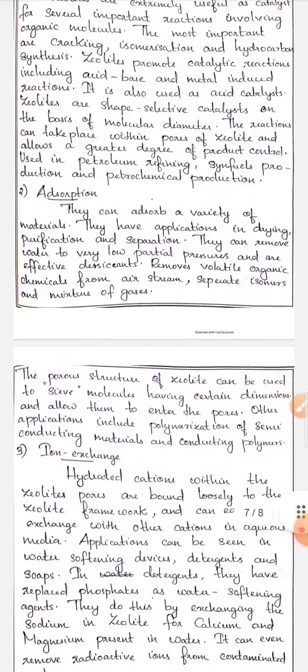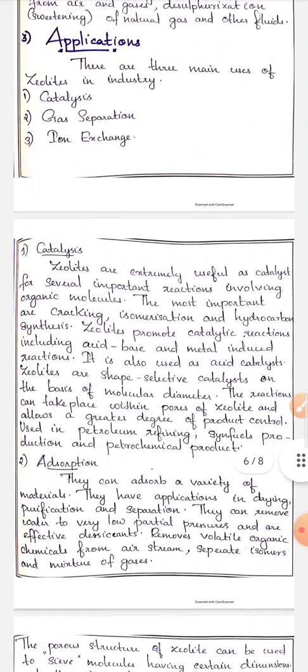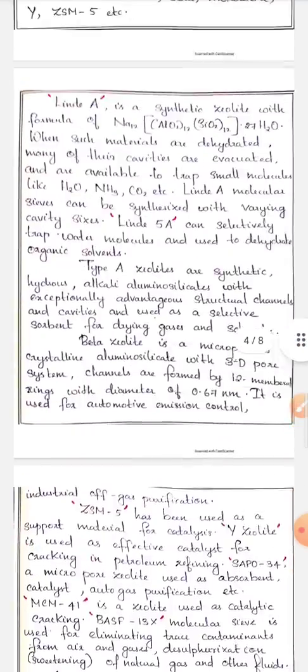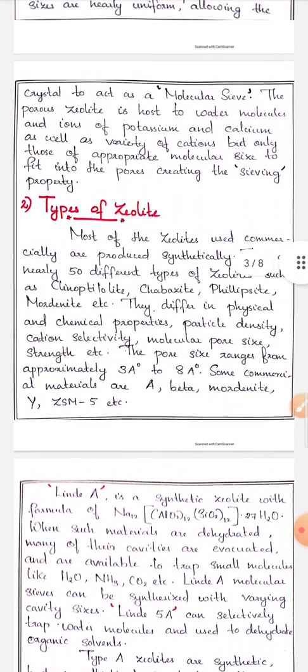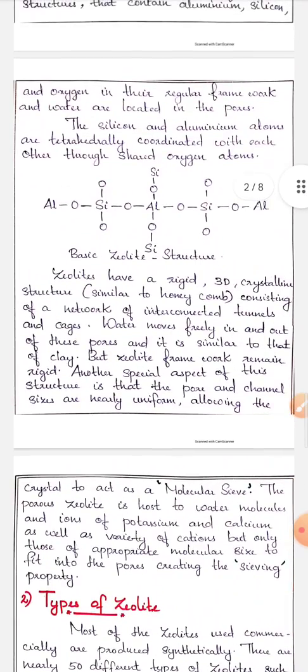So, once again, zeolites are three-dimensional, microporous, crystalline substances with well-defined structures that contain silicon, aluminum, and oxygen in their regular framework. The silicon and aluminum atoms are tetrahedrally coordinated with each other through shared oxygen atoms, giving a honeycomb-like structure.